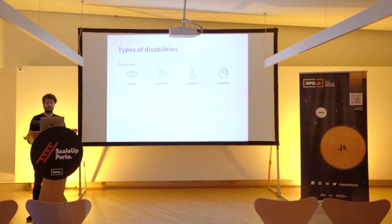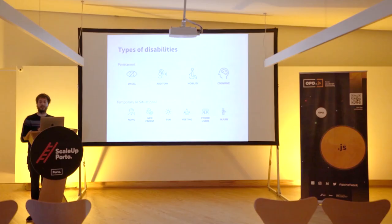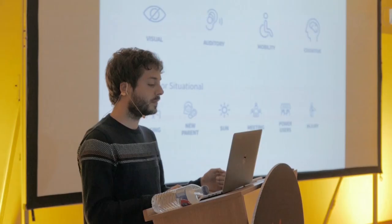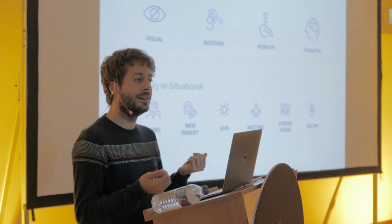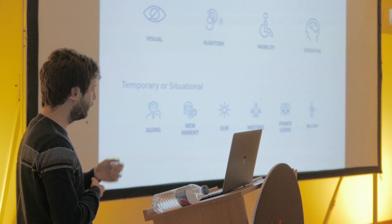If we think more broadly, some disabilities are actually temporary or situational. For example, aging decreases our abilities such as sight. Or maybe you're a new parent using your phone with just one hand. Or you're outside with the sun hitting your screen affecting contrast. Or you're in a meeting and can't hear audio. Or you've had an arm injury.